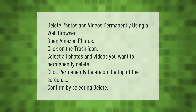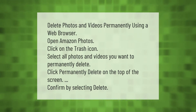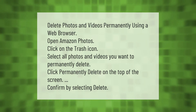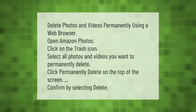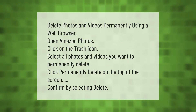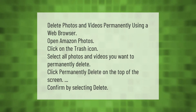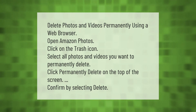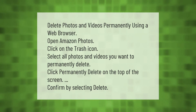To delete photos and videos permanently using a web browser: open Amazon Photos, click on the trash icon, select all photos and videos you want to permanently delete, click 'Permanently Delete' at the top of the screen, then confirm by selecting 'Delete'.